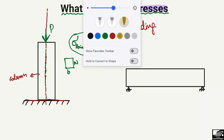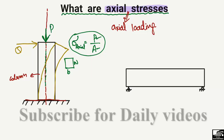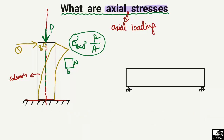Now consider another type of load — a lateral load acting on this column, represented by Q. This load will try to buckle the column in a lateral direction. This load is not acting parallel to the axis of the column but perpendicular to it, making a 90-degree angle with the axis. So it is not an axial load but a lateral load, and the stresses created due to this lateral load will not be called axial stresses but a different type of stress.